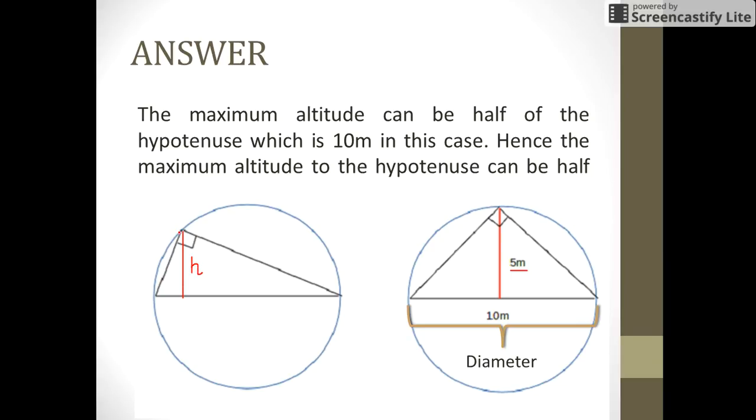For this we start moving this point of the triangle on the circumference of the circle until we reach a point shown here where this altitude becomes equal to the radius of the circle.